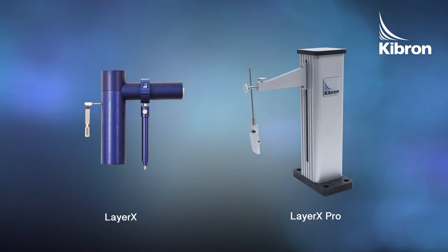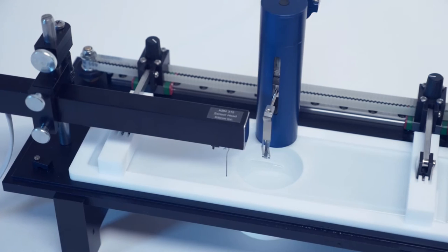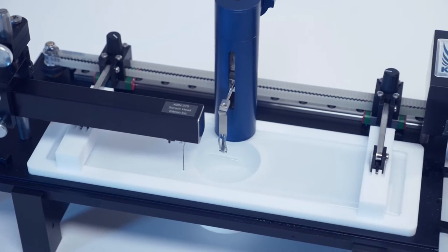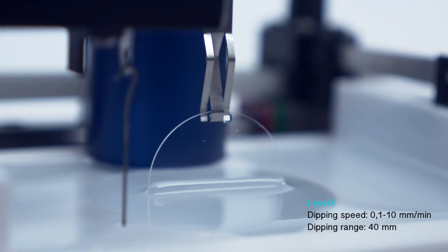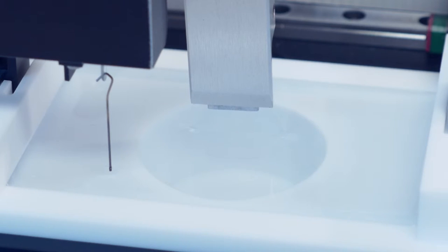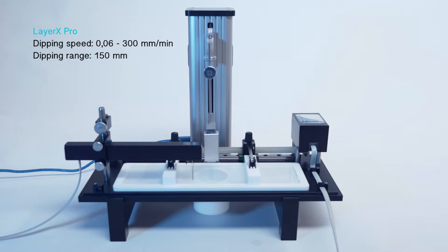Using a dip coater, the substrate is dipped in and pulled out of the solution to coat the substrate with a thin layer of molecules. Kibron dip coaters are available as software-controlled version or version with hand control unit.